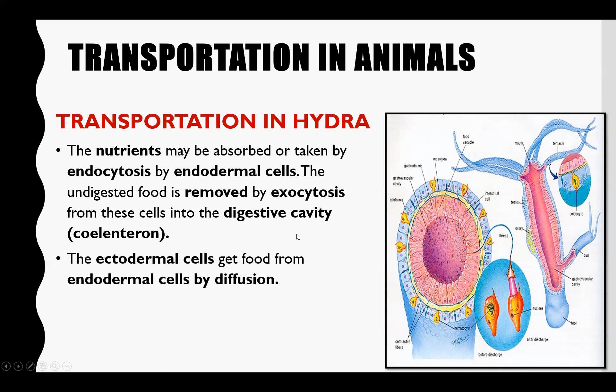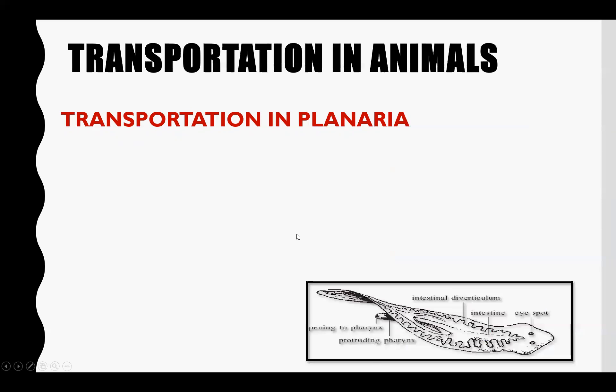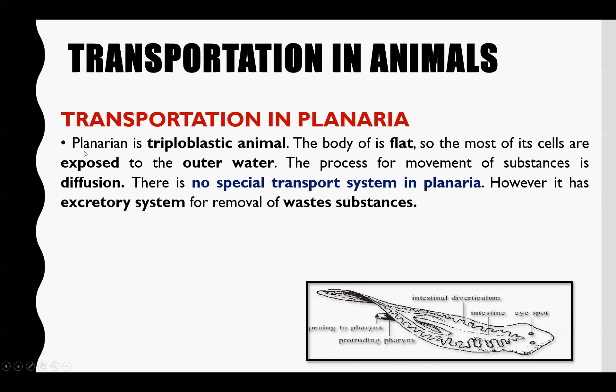After this, we discuss how transport occurs in planaria. Planaria belongs to the third phylum, platyhelminthes. This is also a simple organism. It is a triploblastic organism, meaning its body is made from three layers: ectoderm, endoderm, and mesoderm.